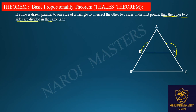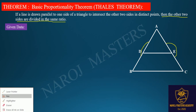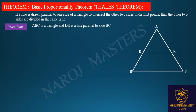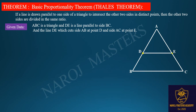Look at the given data: ABC is a triangle and DE is a line parallel to side BC. The line DE cuts side AB at point D and cuts side AC at point E. What is required to prove? We need to prove that AD divided by DB is equal to AE divided by EC.